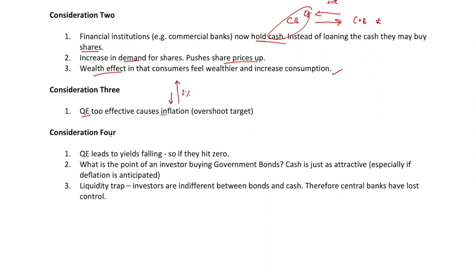Consideration four: QE leads to yields falling, but what if they fell all the way to zero? If yields fell to zero, there would be no point in an investor buying government bonds, because if the yield is zero they may as well just hold cash — cash becomes just as attractive. Investors become indifferent between bonds and cash, especially if deflation is anticipated. This is known as the liquidity trap — when investors are indifferent between bonds and cash, and central banks have lost control.